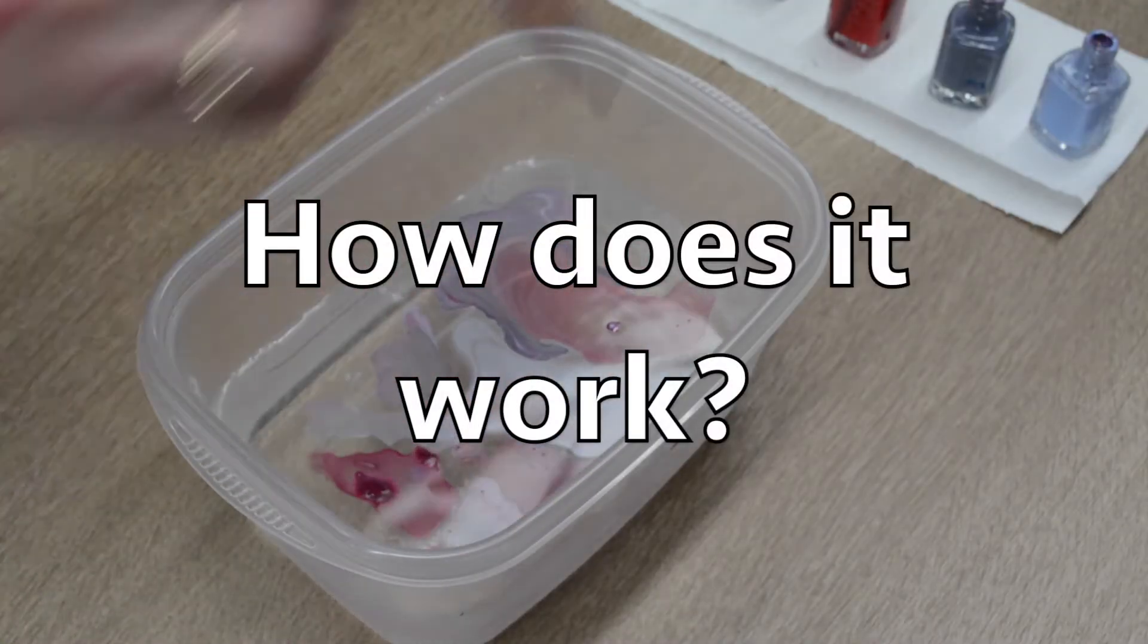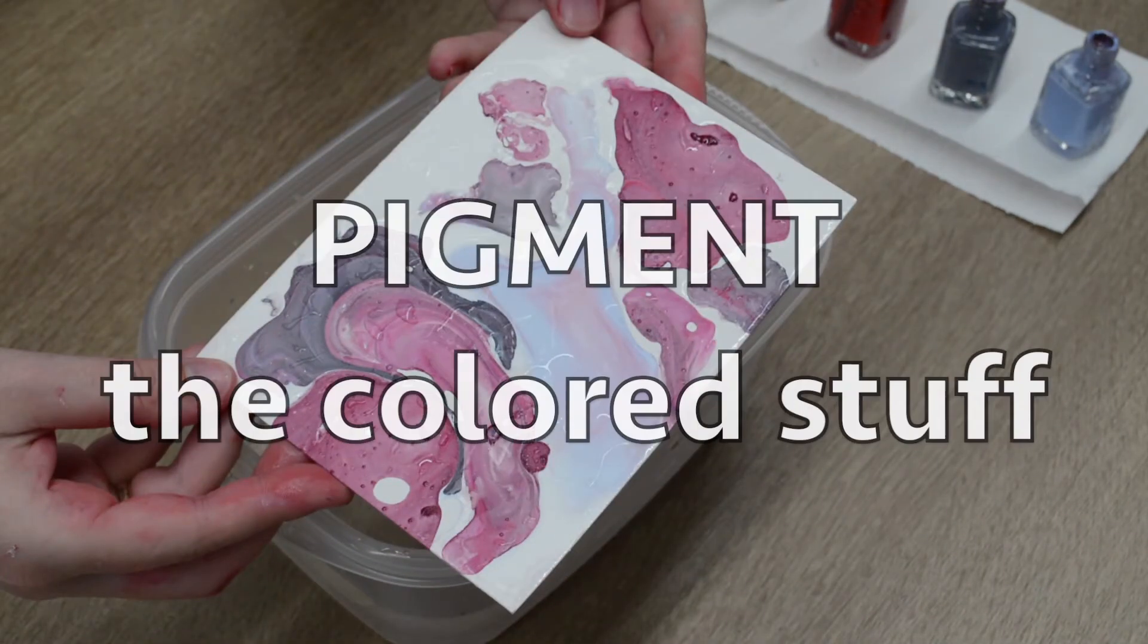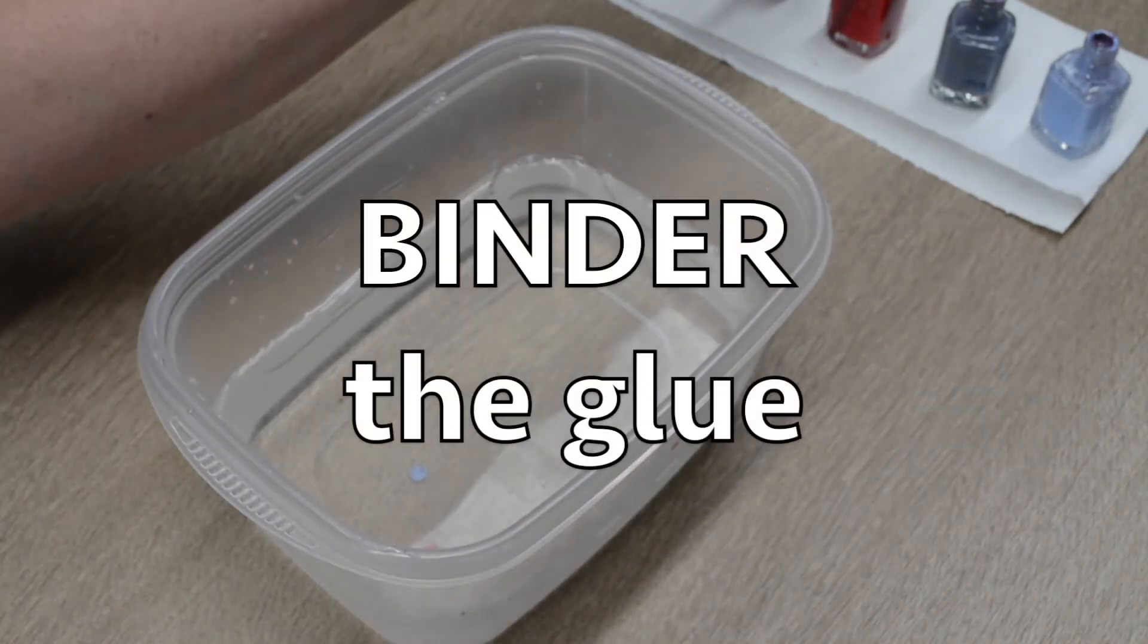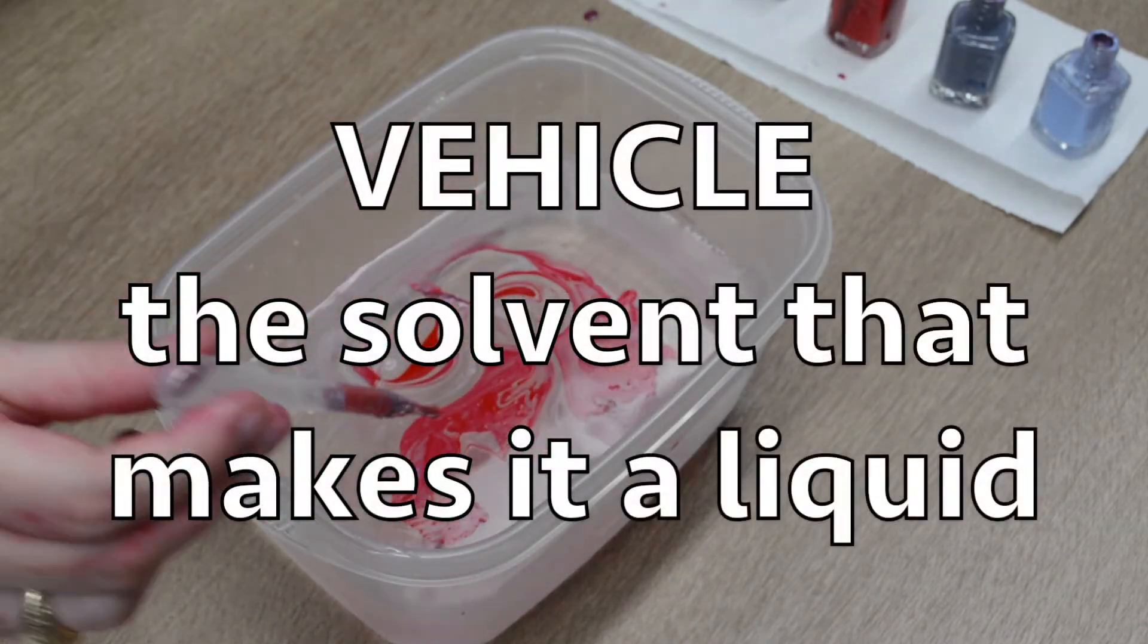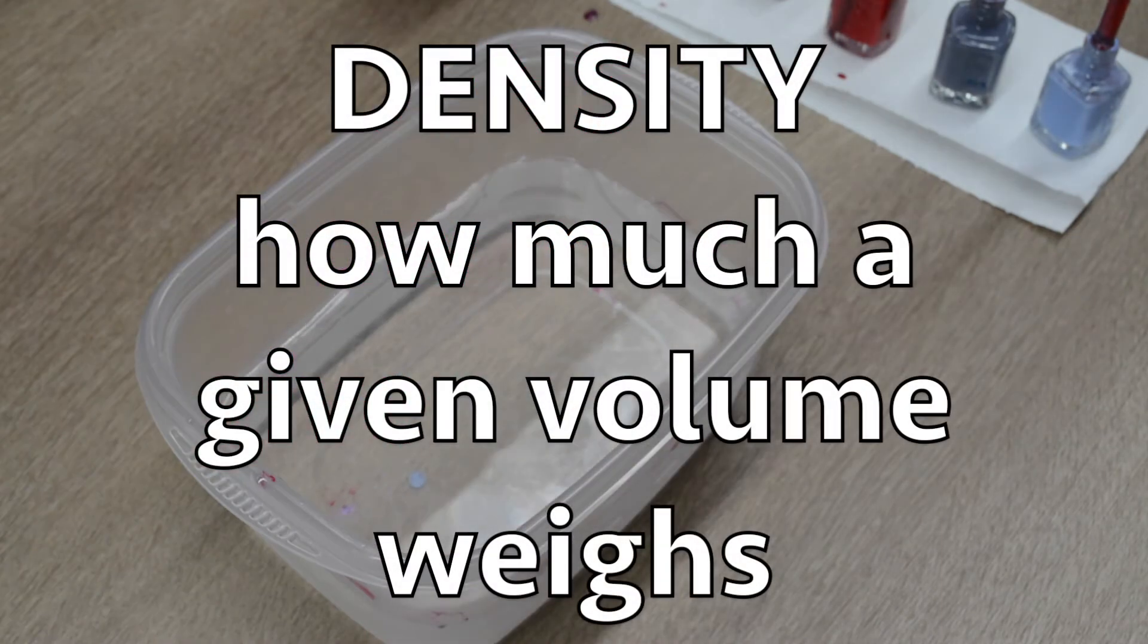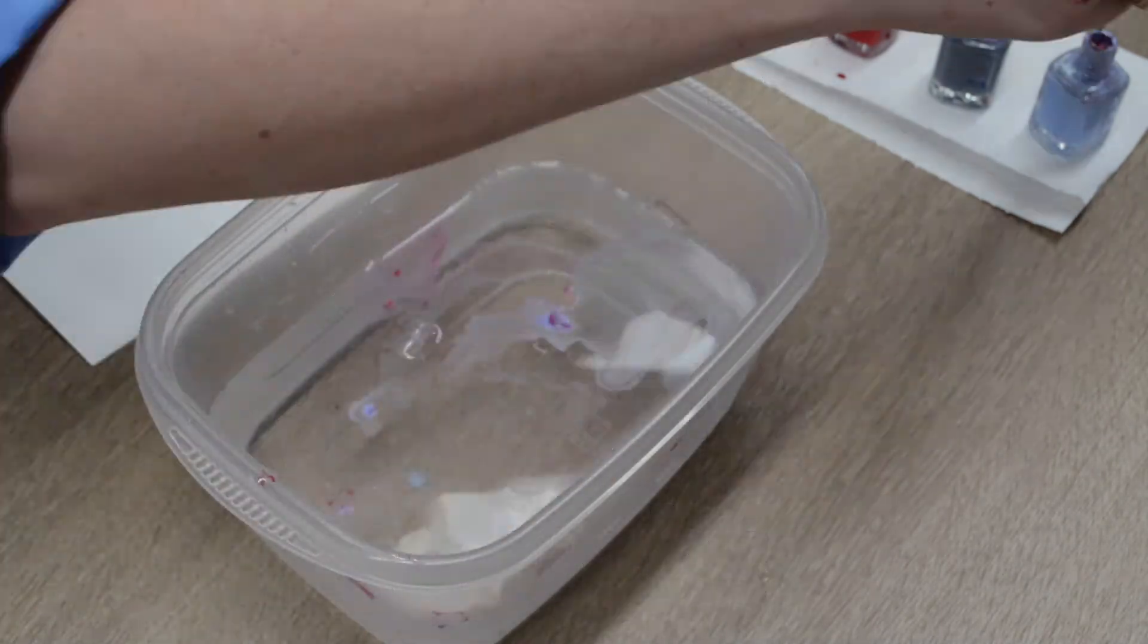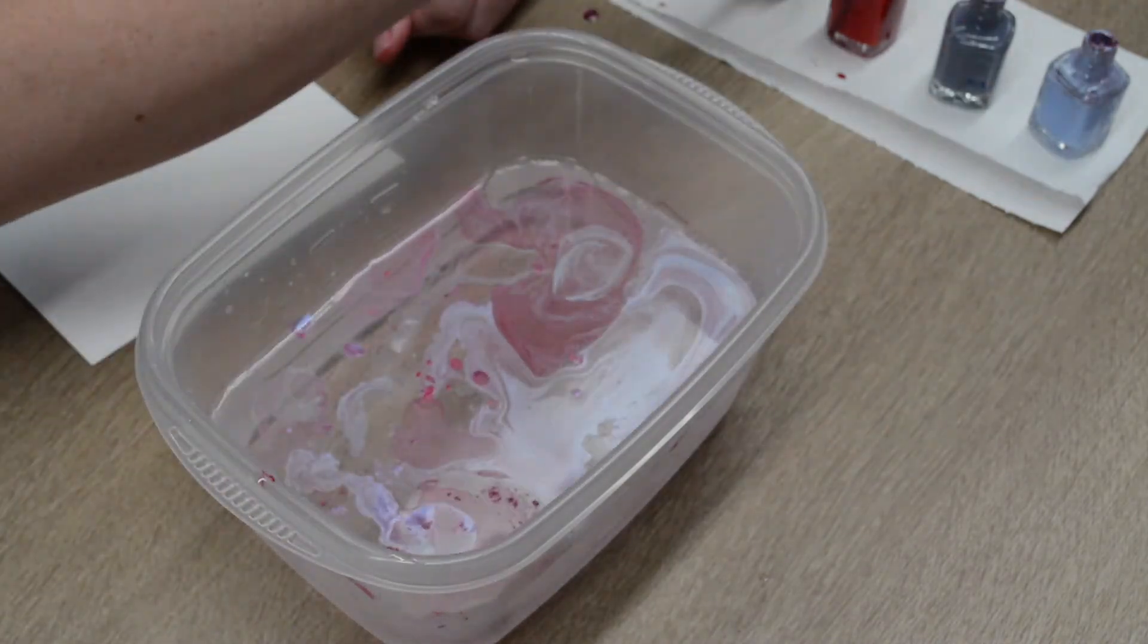So how exactly does this work? Nail polish in the bottle has three main ingredients. That's pigment, the colored stuff, binder, the glue that holds it onto your nail, and the vehicle, the solvent that makes it all a liquid. The sink or float property is determined by density, how much a given volume weighs. Most solvents, at least those using nail polish, are less dense and will float on water.